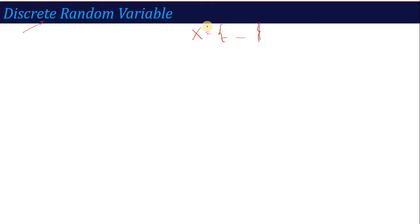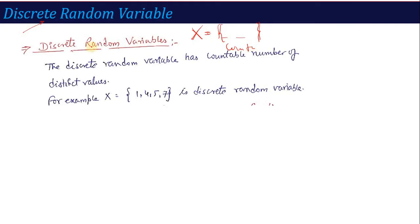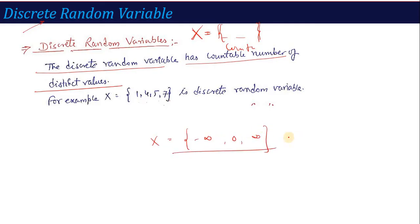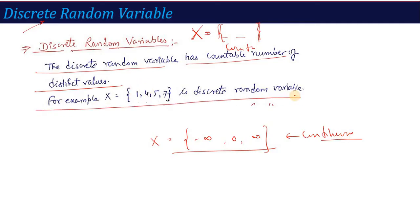What does discrete random variable mean? If you have the random variable value that is countable in nature — the discrete random variable has a countable number of distinct values, that is called the discrete random variable. For example, x can take any value 1, 4, 5, 7 — that is a discrete random variable. But if x can take any value from minus infinity to plus infinity, then that is called the continuous random variable.